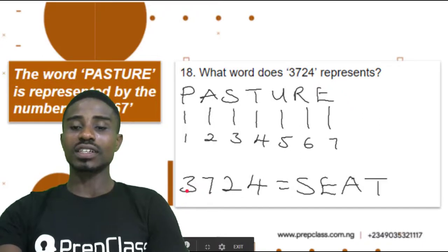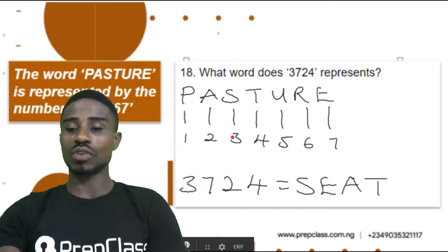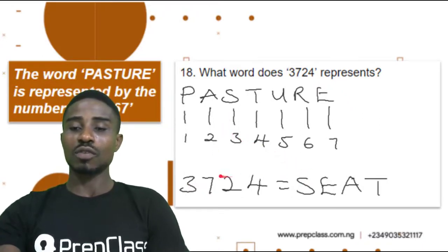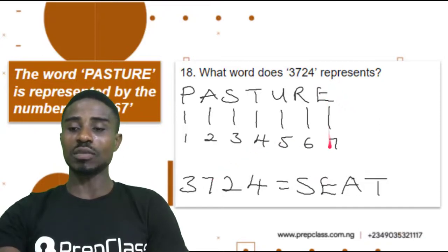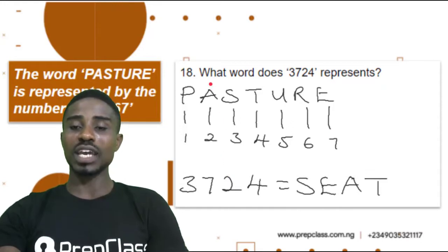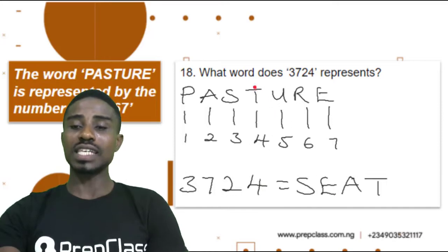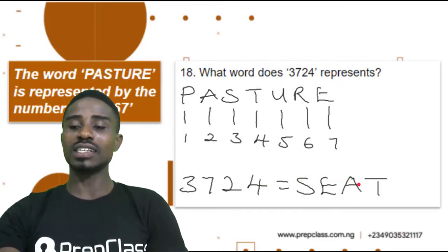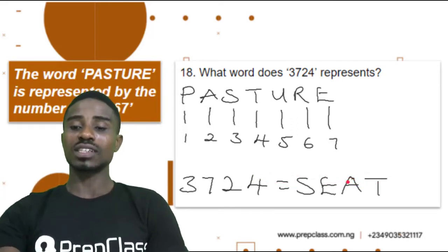For 3, it is represented with S — write down S. For 7, it is represented with E — write down E. For 2, it is represented with A — write down A. And for 4, it is represented with T — write down T. So 3, 7, 2, 4 is represented with the word S-E-A-T, which is pronounced as SEAT.